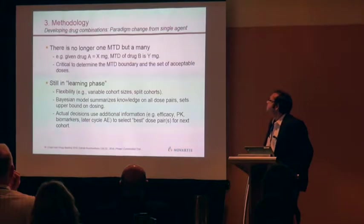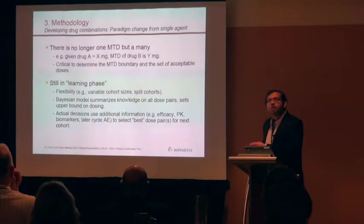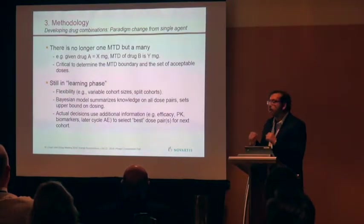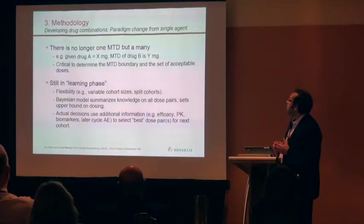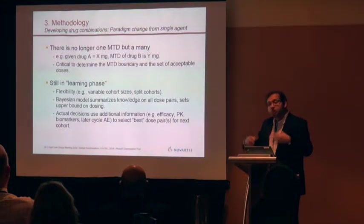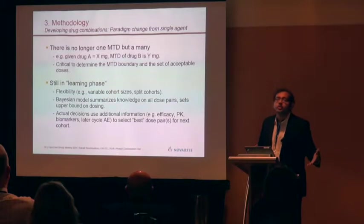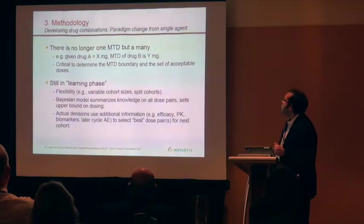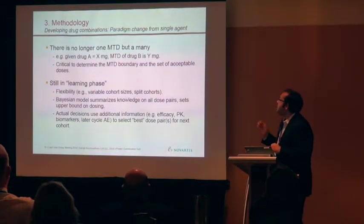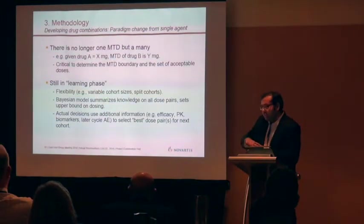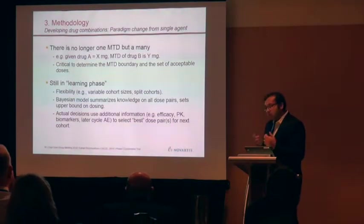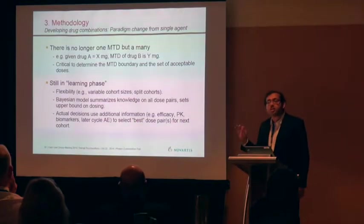In drug combination, things become problematic. You are not in a monotonic setup anymore. You may not have a unique MTD — you may have a region on a surface satisfying your maximum toleration criteria. That's the first challenge. The second challenge: how do we escalate, and in which direction? The model may suggest a direction that has no clinical or development interest. We need something flexible, with parallel cohorts to explore both directions, to decide what is optimal. We need to know at each stage, given the data, what the surface looks like and which dose pair is best for the next step.